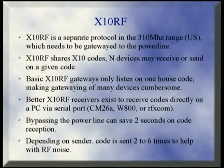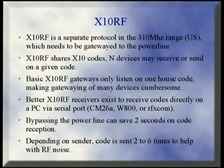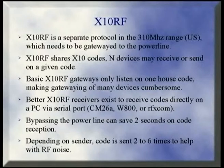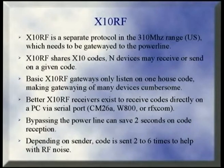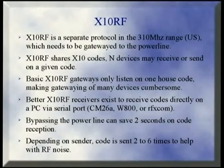XNRF is an RF extension of X10. It has the same principle of house codes, no retries, no acknowledgments. But it does send the RF signal three to five times in case the first time it didn't get through. The default kits have a little power plug with an antenna that will gateway the RF back to your power line. But the antennas don't go very far, and there's a delay of up to two seconds by the time it makes it to your PC to see what went on. So it's cheap, but it's not the best solution.